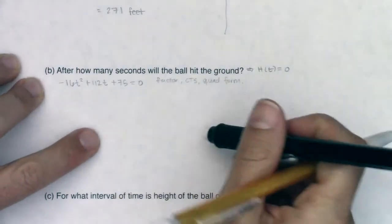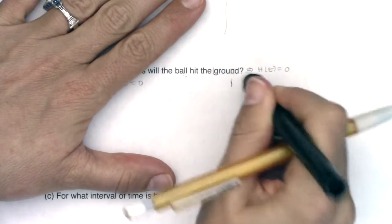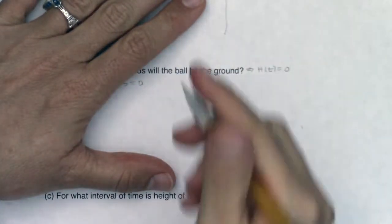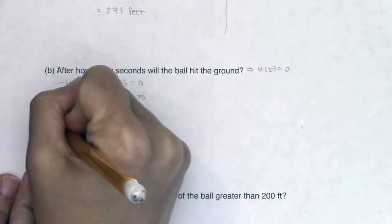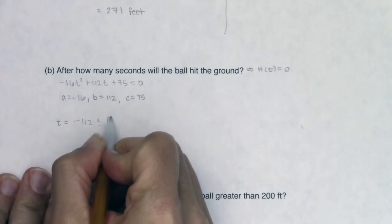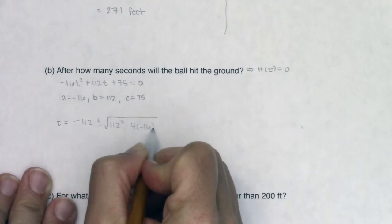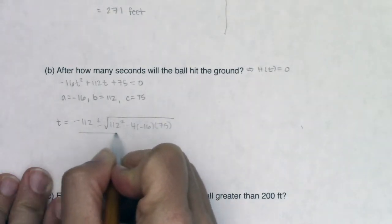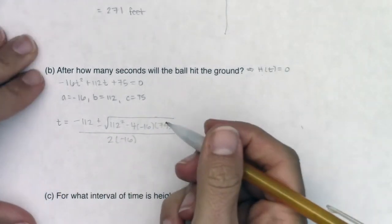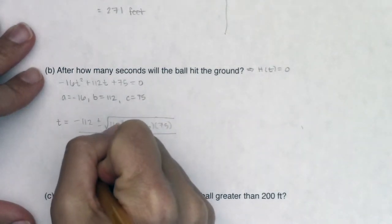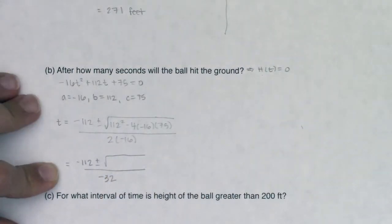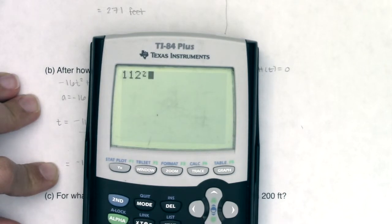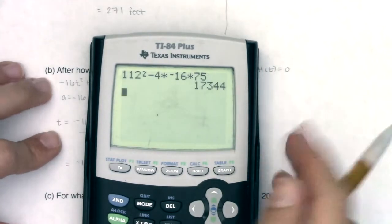Let's figure out a, b, and c. In this problem, a equals negative 16, b equals 112, and c equals 75. So t equals negative b plus or minus the square root of b squared minus 4ac, all over 2a. This gives us negative 112 plus or minus the square root of something, over negative 32. Let's calculate the discriminant: 112 squared minus 4 times negative 16 times 75 equals 17,344.